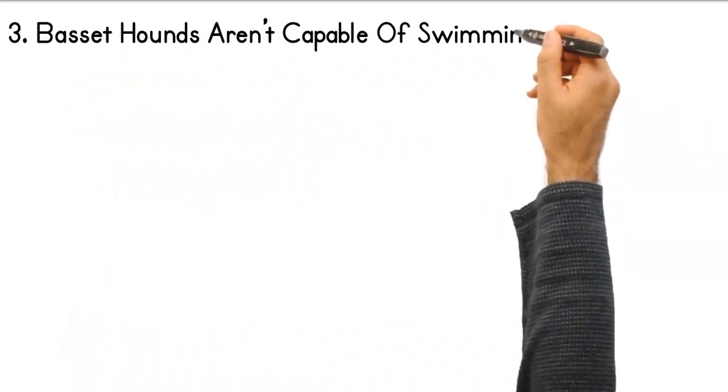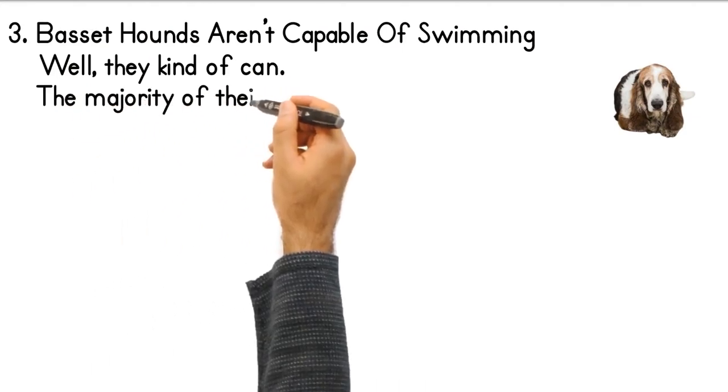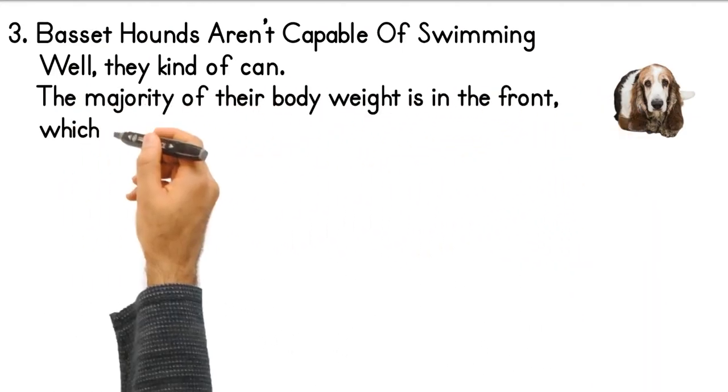3. Basset hounds aren't capable of swimming. Well, they kind of can. The majority of their body weight is in the front, which sets them up for disaster.